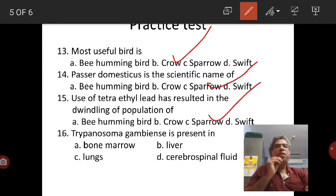Trypanosoma gambiancy is present in cerebrospinal fluid. This Trypanosoma gambiancy that is present in cerebrospinal fluid causes African sleeping sickness.